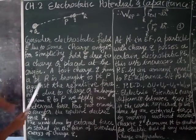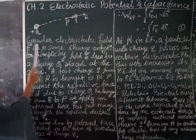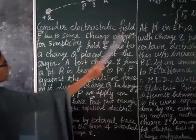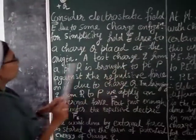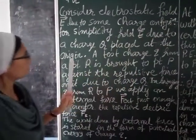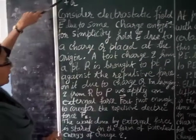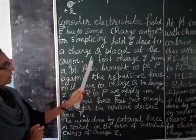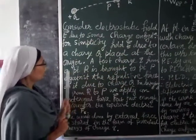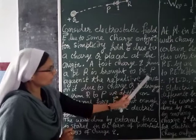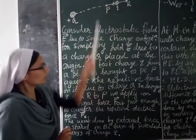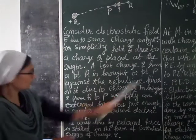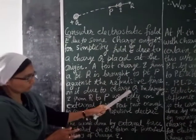Now let's go through what the points are. Consider the electrostatic field E due to some charge configuration — for simplicity, field E due to a charge Q placed at the origin. We consider that this Q is the charge placed at the origin. Now a test charge, that is this plus Q charge, is brought from point R to point P against the repulsive force due to charge Q.